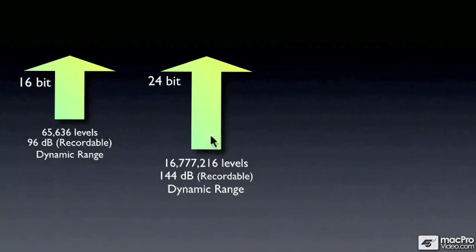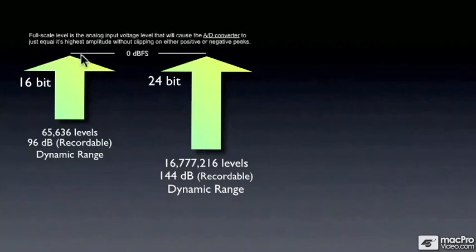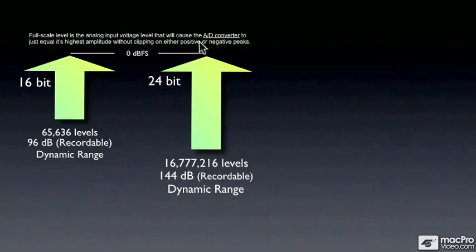That increase in dynamic range doesn't mean that 24-bit can actually sound louder. It can't, because there is a limitation, and that limitation is called 0 dB full scale, which is the absolute limit of your A to D converter. It's the highest amplitude you can record without clipping either positively or negatively. That's the limit, whether you're 16-bit or 24-bit.